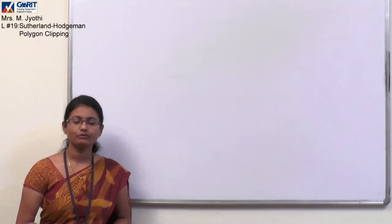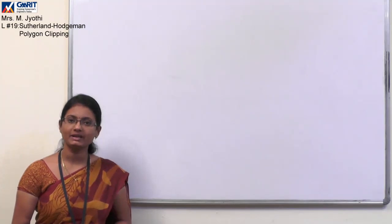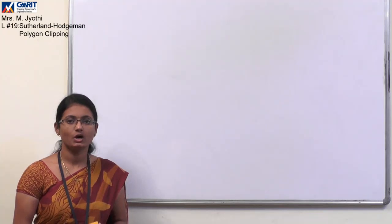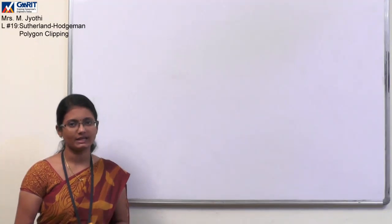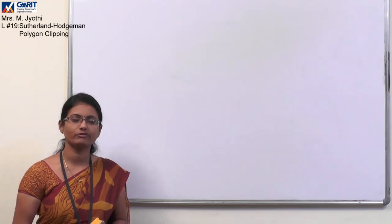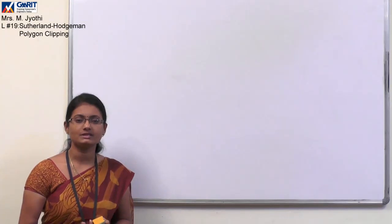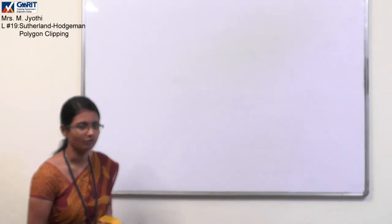Hello everyone. As part of 2D clipping, we discussed how a point can be clipped, how a line can be clipped. Line clipping can be done in two ways using two algorithms: the Cohen-Sutherland line clipping algorithm and the Cyrus-Beck line clipping algorithm. Now let's move on to another algorithm used to perform polygon clipping — the Sutherland-Hodgeman polygon clipping algorithm.